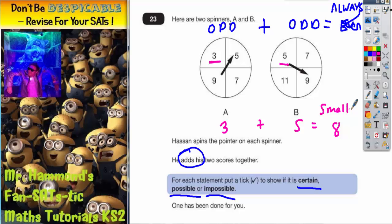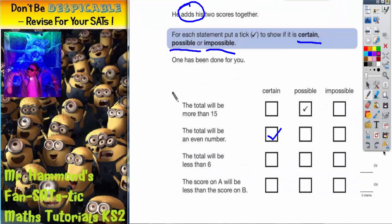Now if the smallest total possible is 8, the total can't possibly be less than 6. The smallest one we can get is 8, so it is impossible to get a total of 6.